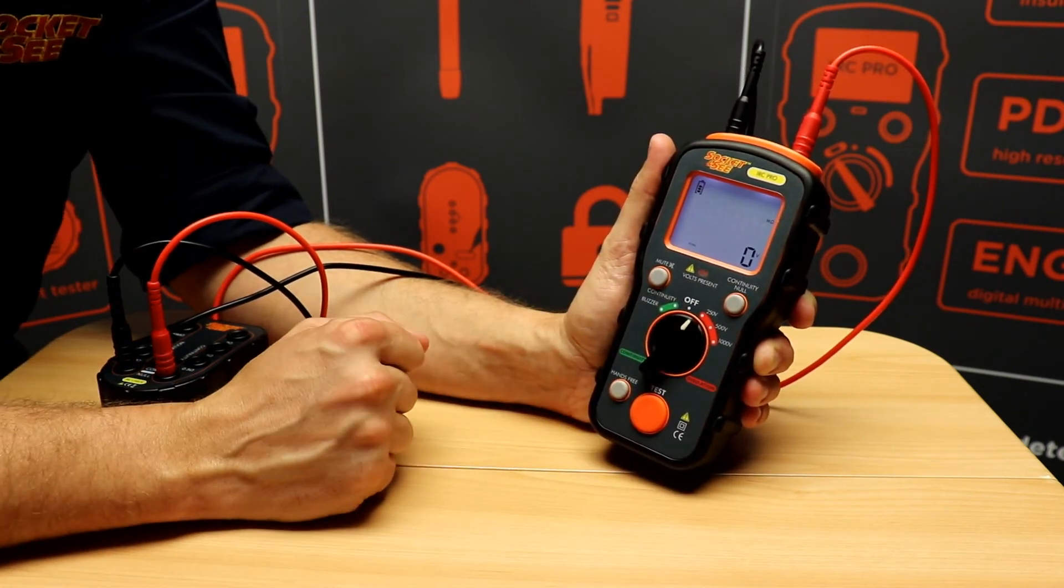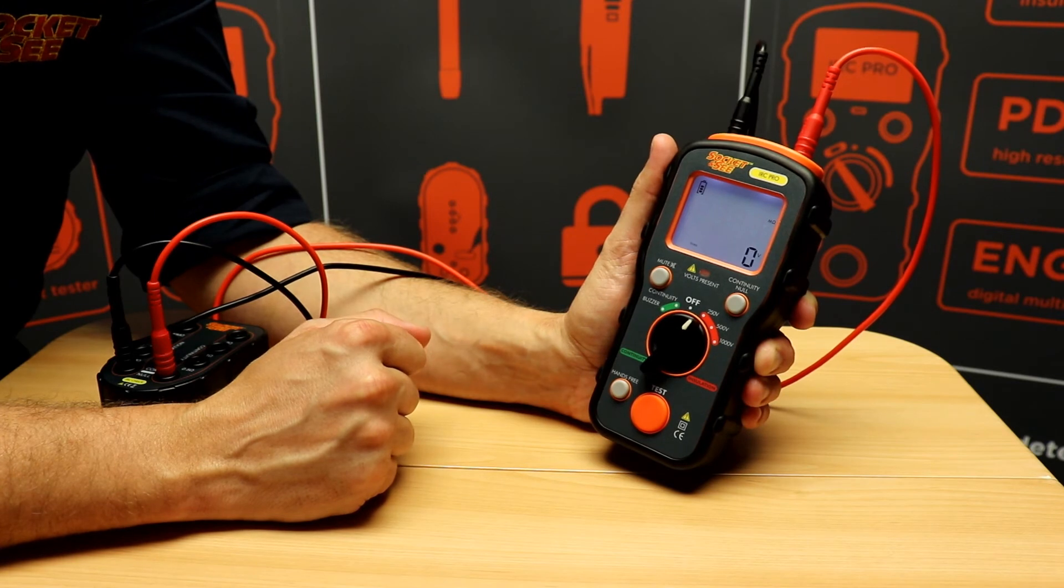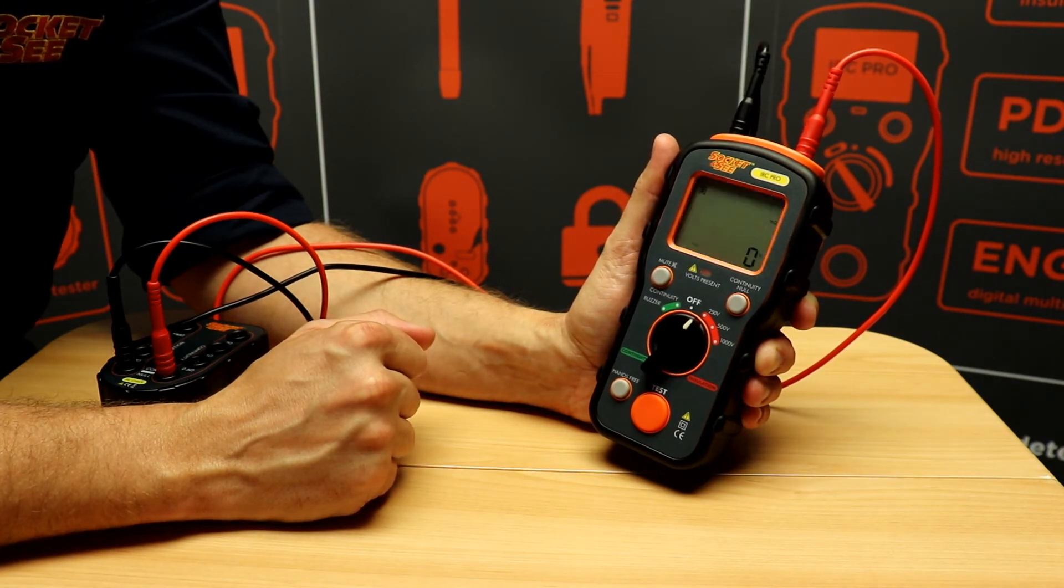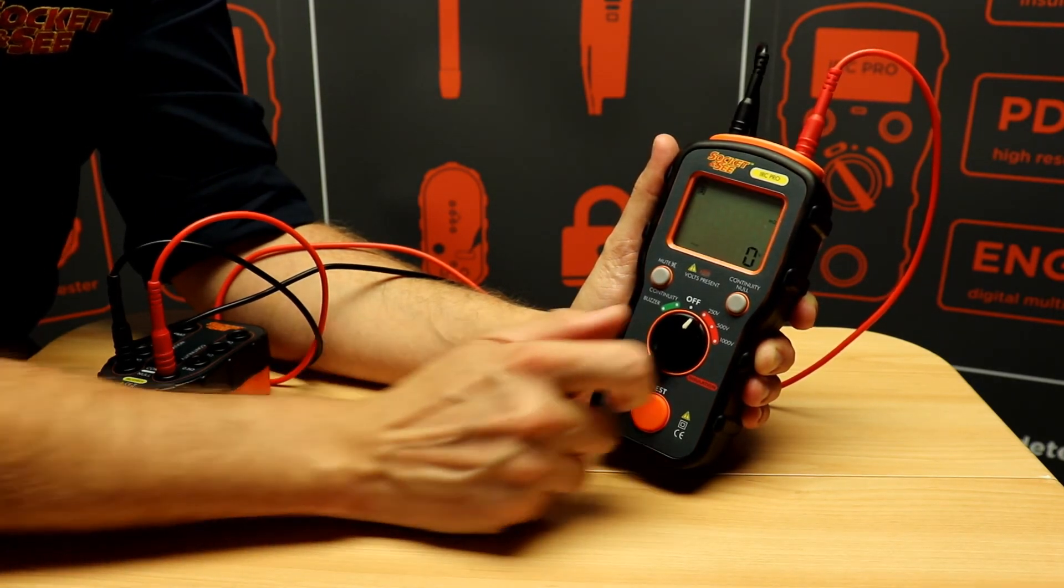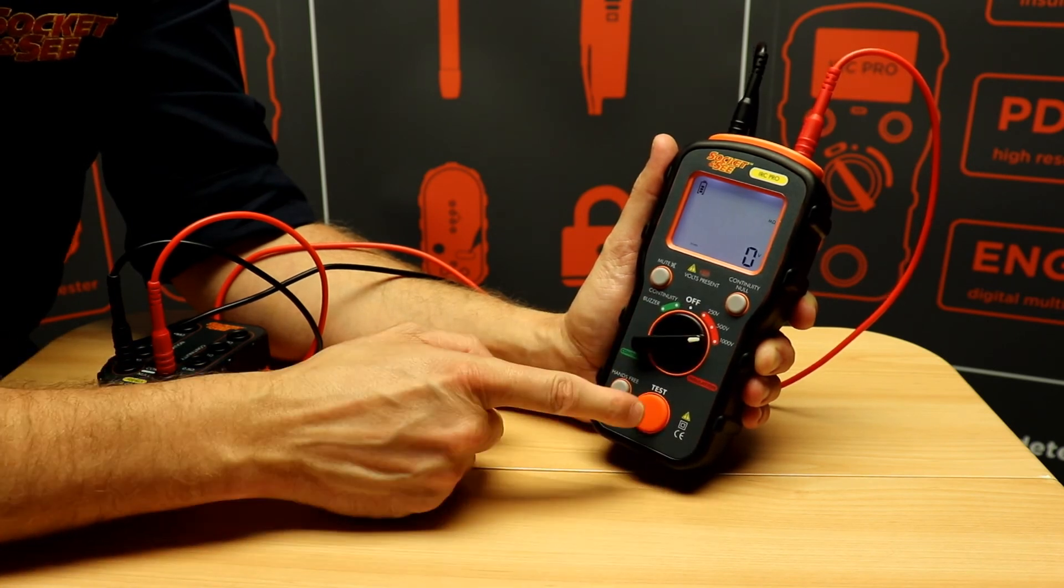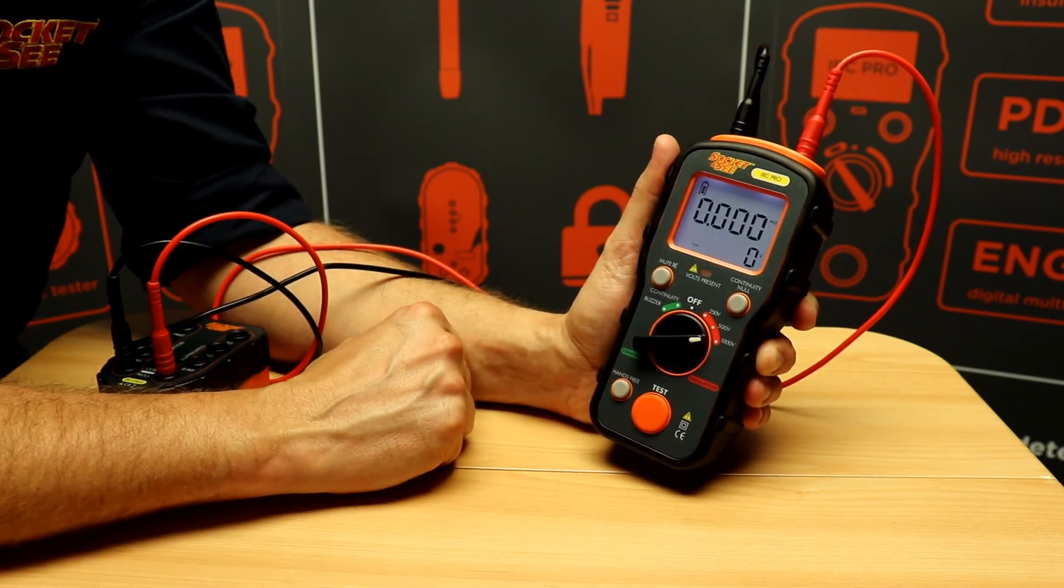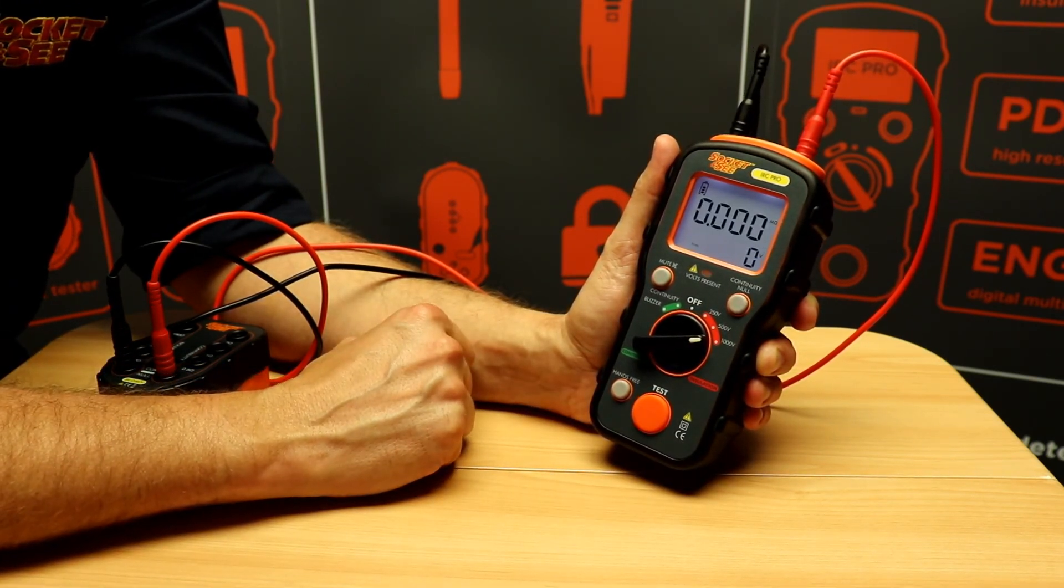For insulation resistance there are 250, 500 and 1000 volt options. Simply select the required voltage and press the test button. Results then given on the screen.